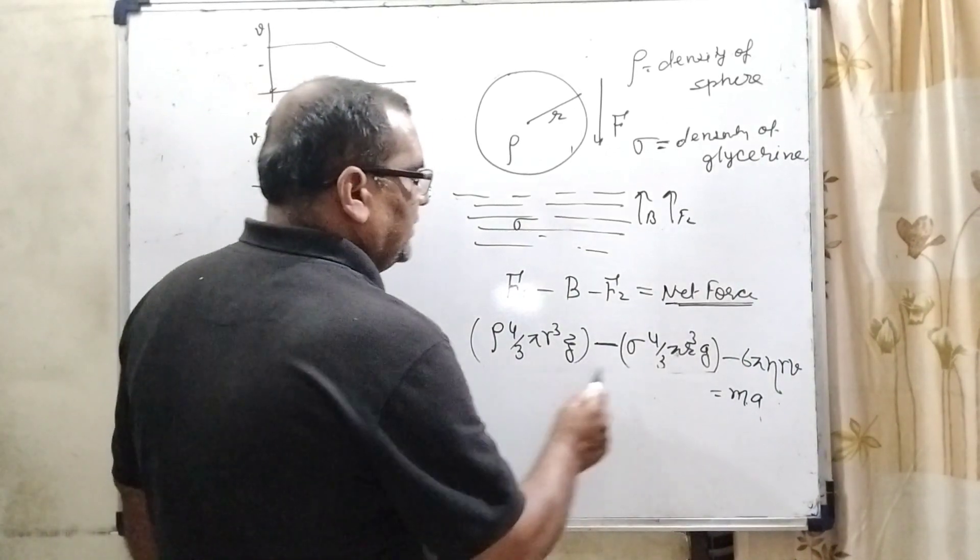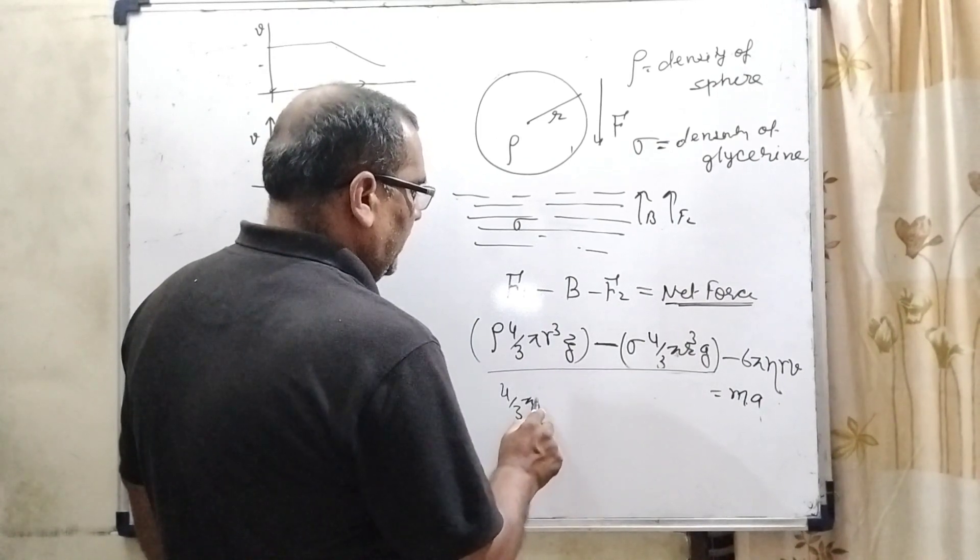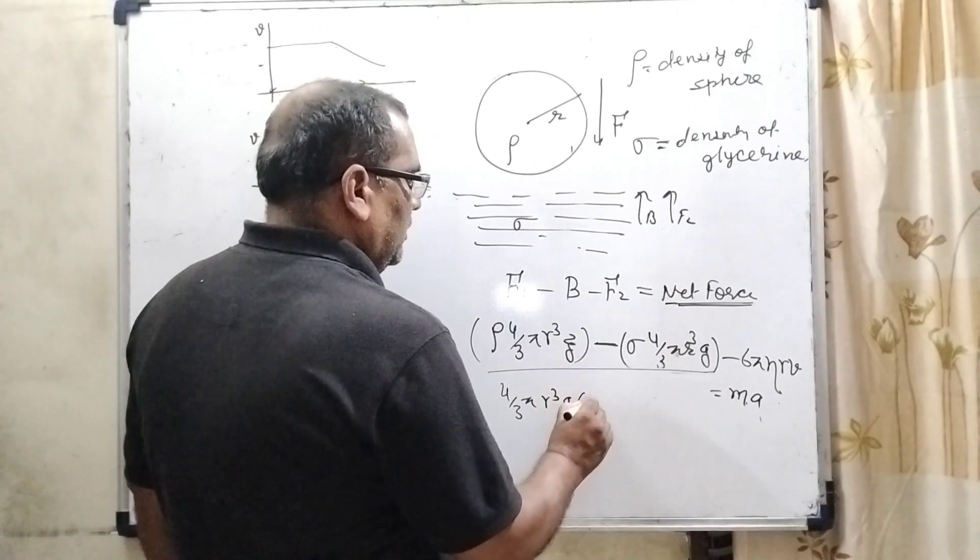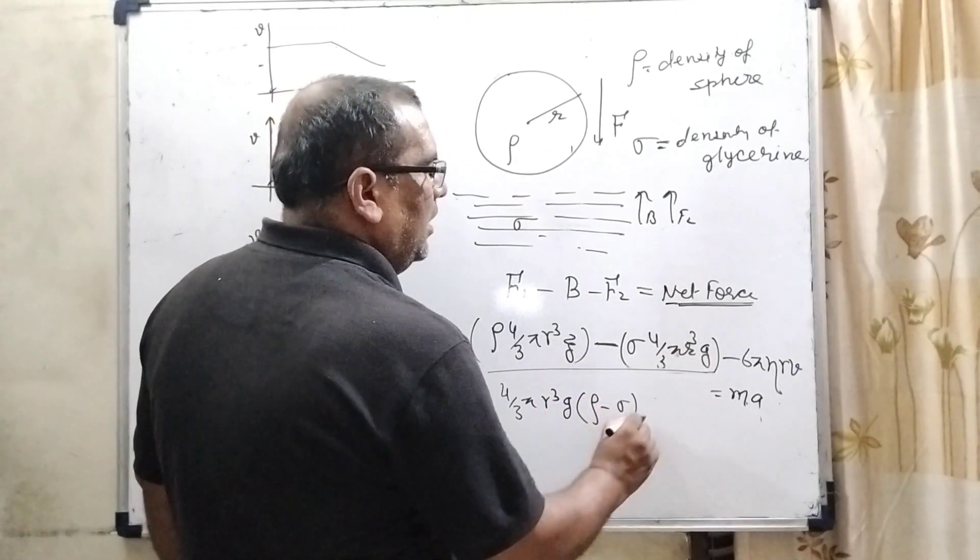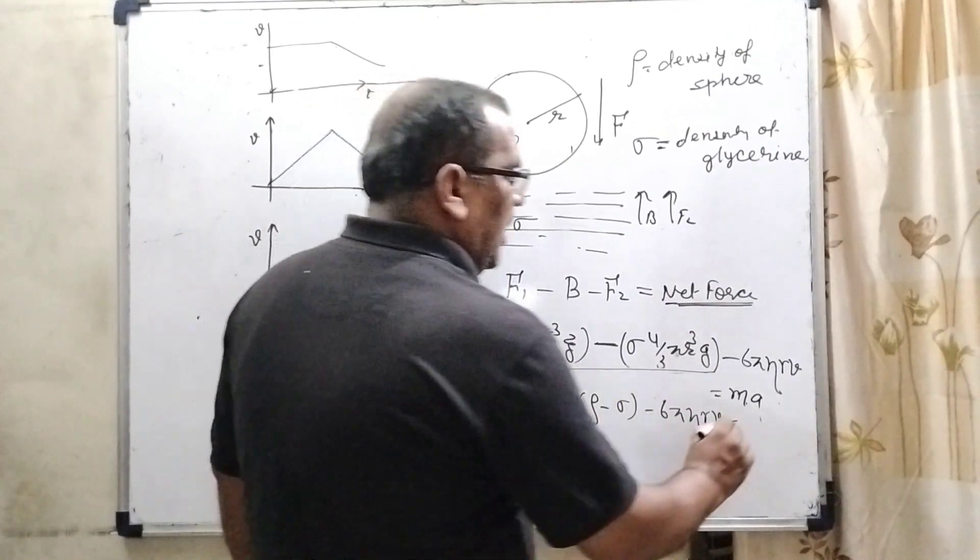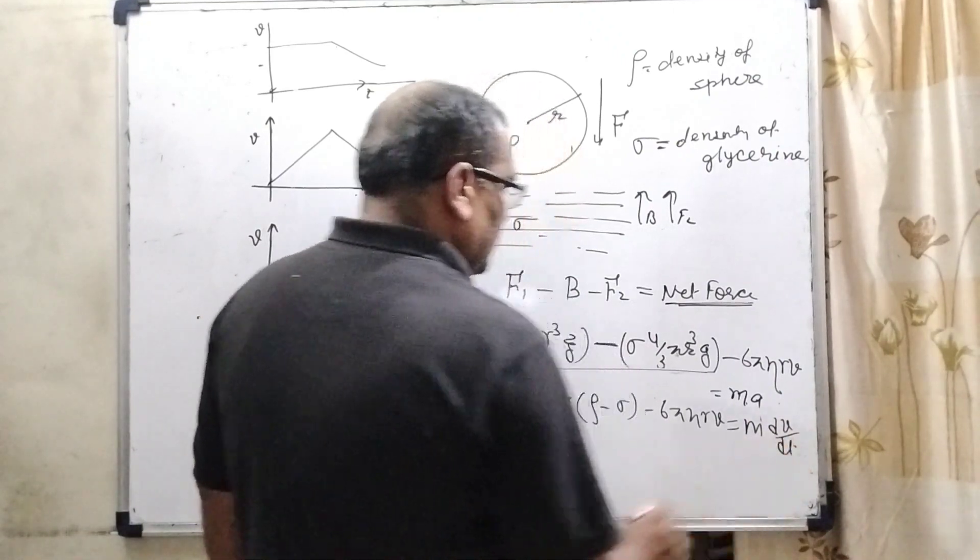Now, we can see that here in two terms 4 by 3 pi R cube G get common rho minus sigma minus 6 pi eta RV is equal to mass and here acceleration can be written as dV by dt.